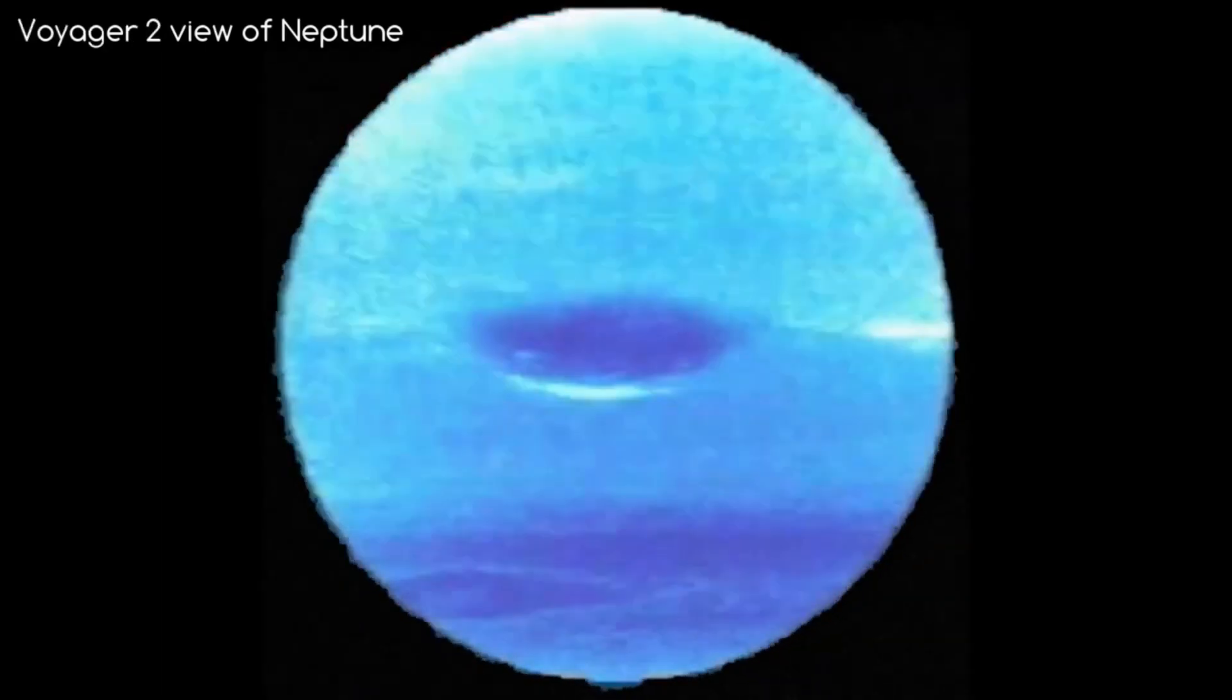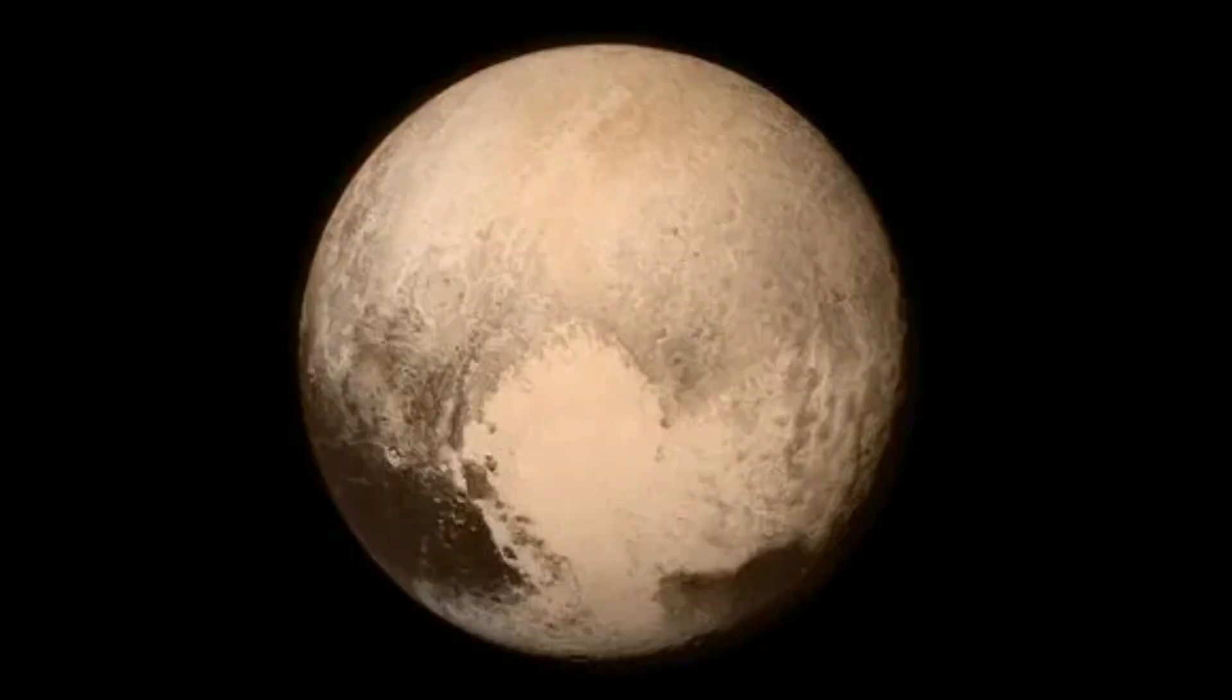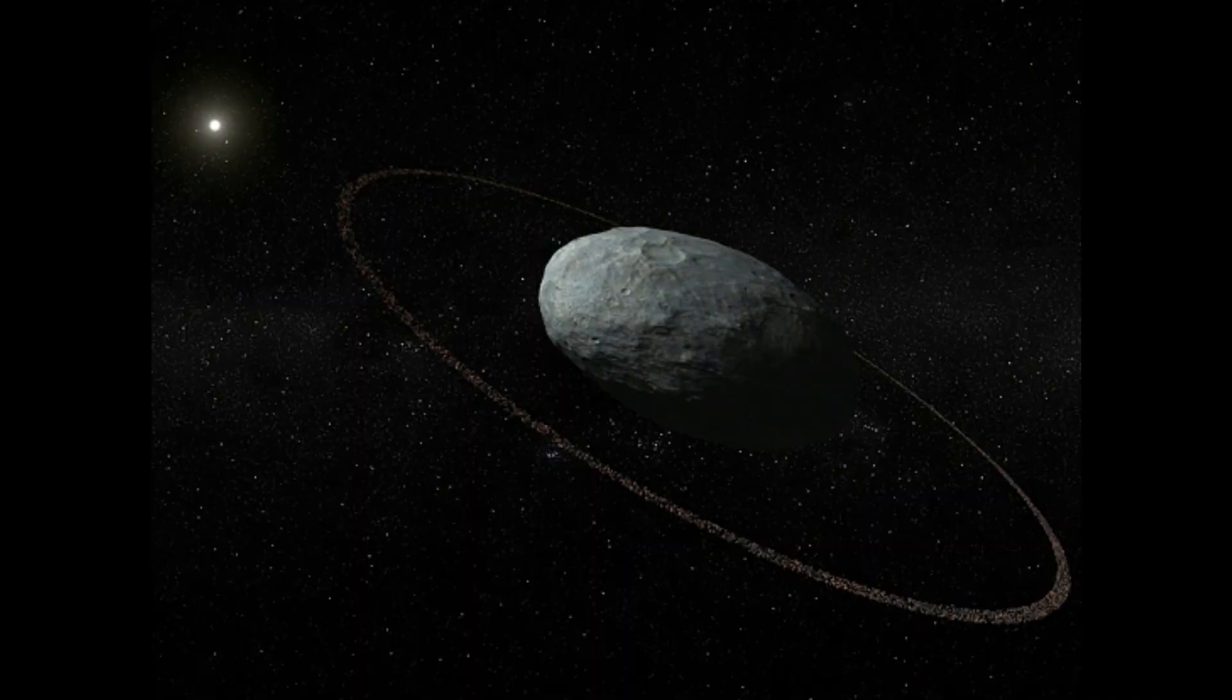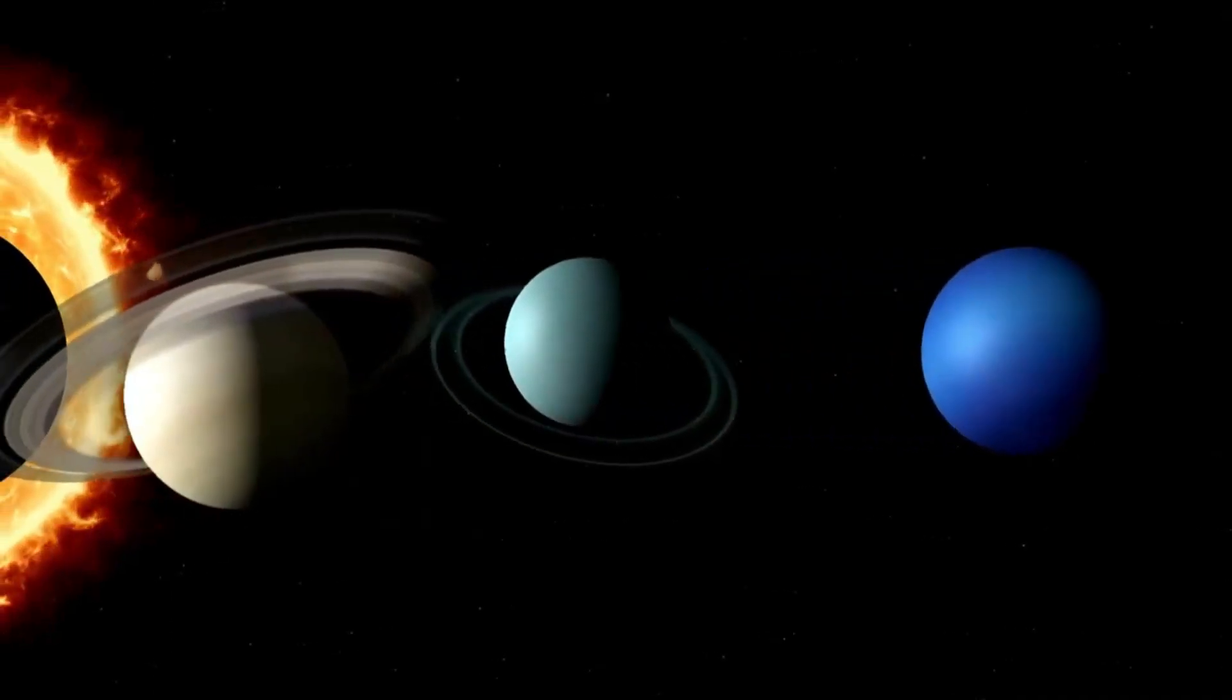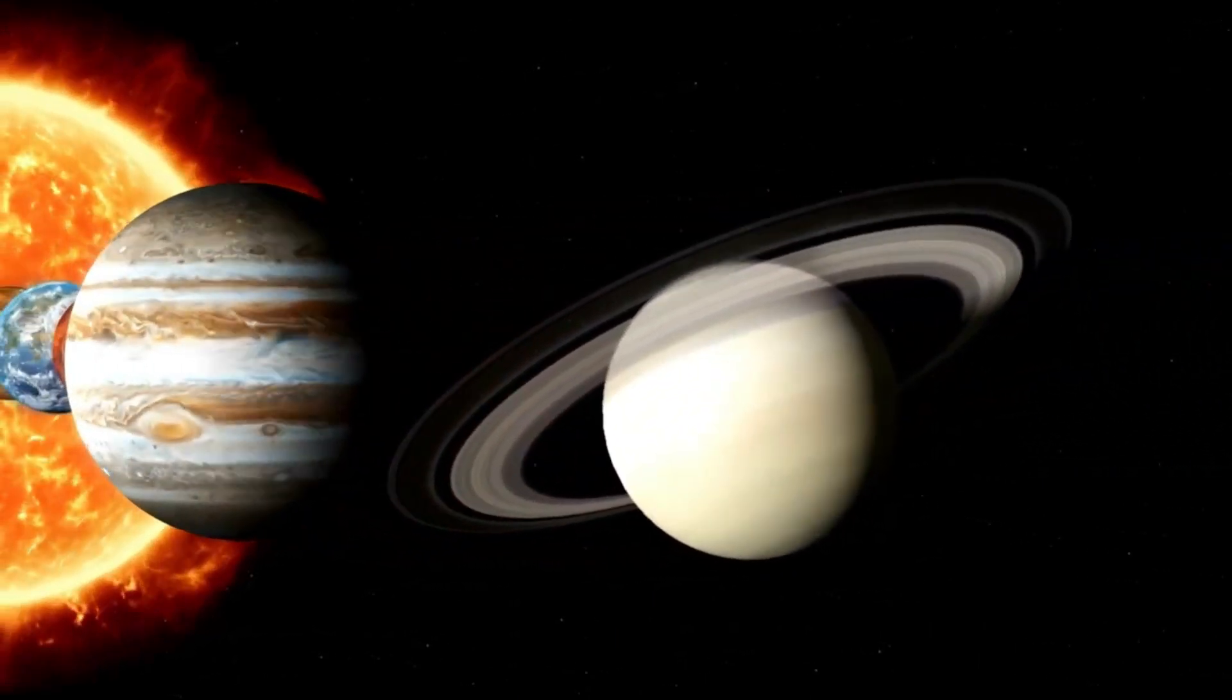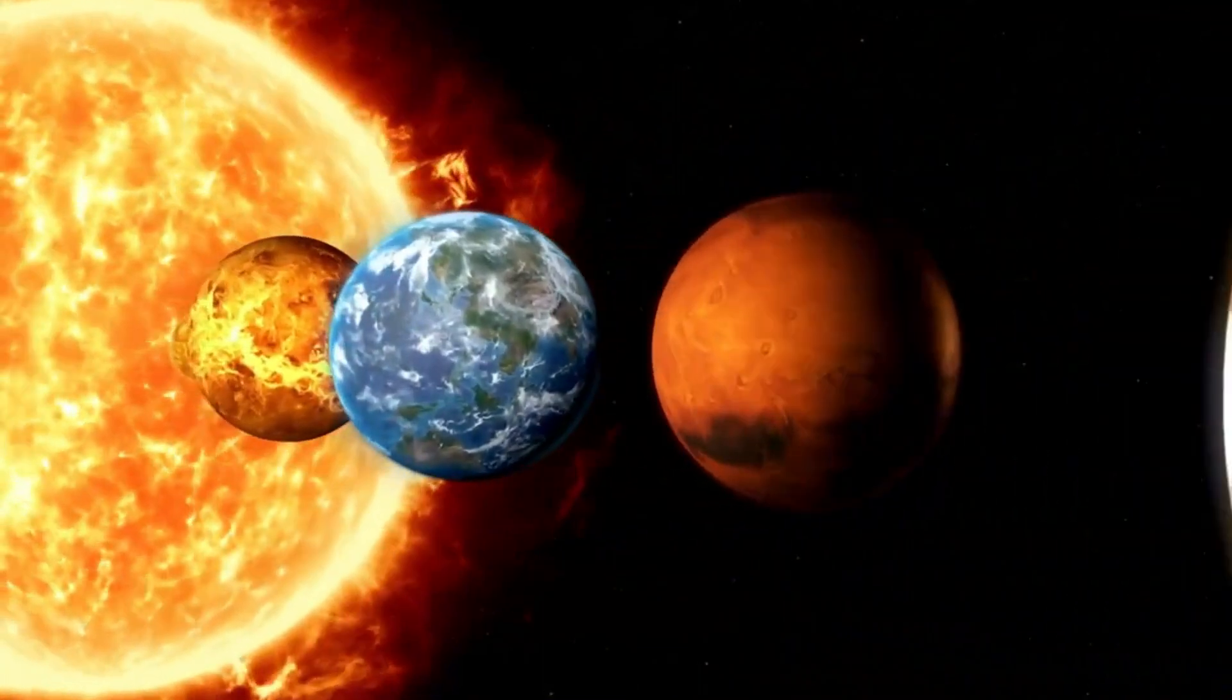Dwarf planets. In addition to the 8 main planets, the solar system is home to 5 dwarf planets: Pluto, Ceres, Haumea, Makemake, and Eris. These celestial bodies, although smaller, are important members of the solar family and teach us a lot about the diversity of the universe.